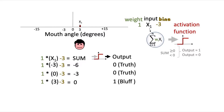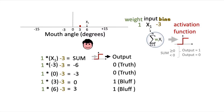When the smile angle is equal to 6, we get 1 times 6 minus 3, which equals 3. Since the sum is greater than or equal to 0, passing through the activation function gives an output of 1, telling us that Sam is bluffing.